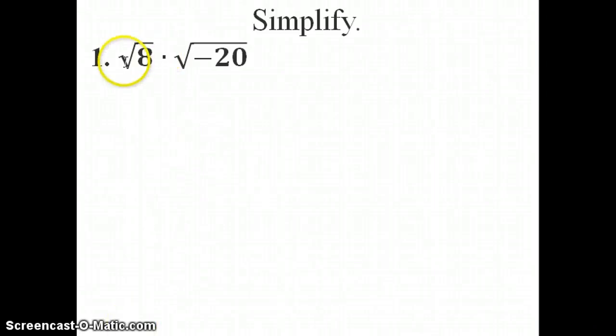On this one, we're asked to simplify this. We've got the square root of 8 times the square root of negative 20. So I need to break each one of these down.